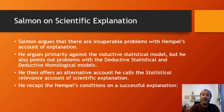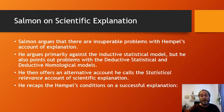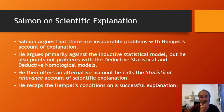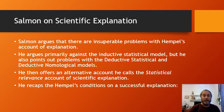Salmon in general is going to be arguing against the inductive statistical and deductive accounts by Hempel. He's primarily focused on the inductive statistical model, but he will also point out problems with the other models. Then Salmon will offer his own account, called the statistical relevance account of scientific explanation.